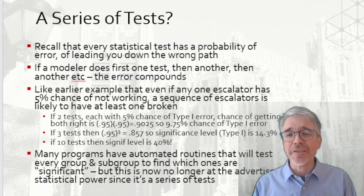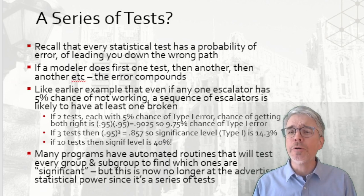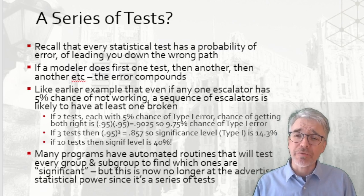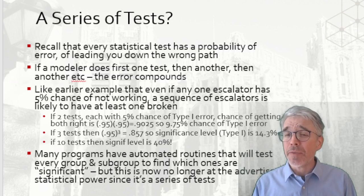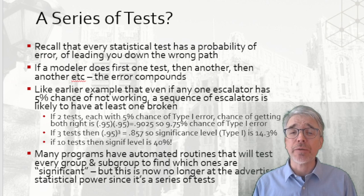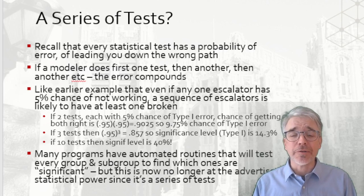Another shady thing that people do is run a series of tests. Every statistical test has some probability of error — the type 1 error is often chosen to be 5%. But if you do several tests in a row, the error compounds. With two statistical tests each having a 5% chance of type 1 error, the probability of not making a type 1 error in either one is 90.25%, which nearly doubles the type 1 error. If I do three tests, my significance is nearly 15% — I've tripled it. Ten tests and the significance level is 40%. That just gets bonkers.